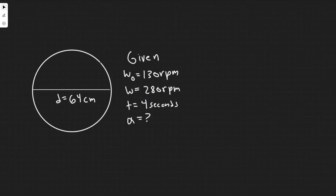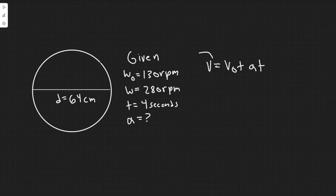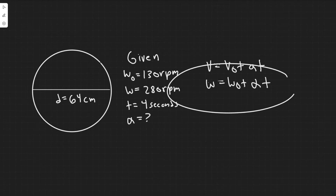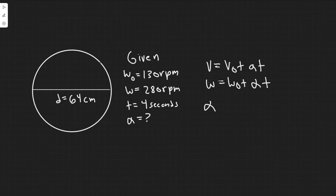The equation we're going to use is, from kinematics, v equals v-sub-zero plus a times t — the final velocity equals initial plus acceleration times time. In this case we're using rotational variables, so omega equals omega-zero plus alpha times t. Solving for alpha, you just move omega-zero to the other side: alpha equals omega minus omega-zero divided by t.